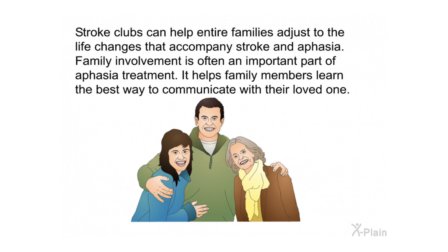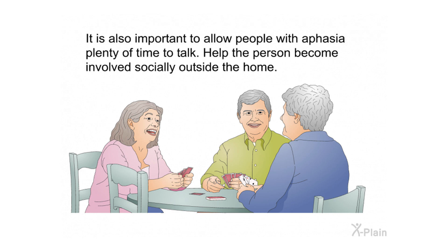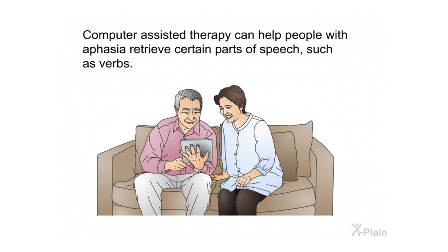Stroke clubs can help entire families adjust to the life changes that accompany stroke and aphasia. Family involvement is often an important part of aphasia treatment. It helps family members learn the best way to communicate with their loved one. It is also important to allow people with aphasia plenty of time to talk and to help the person become involved socially outside the home. Computer-assisted therapy can help people with aphasia retrieve certain parts of speech, such as verbs.